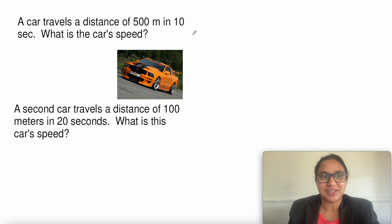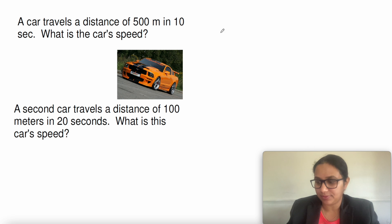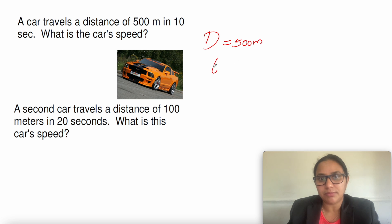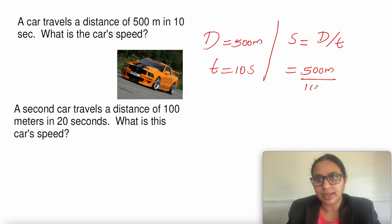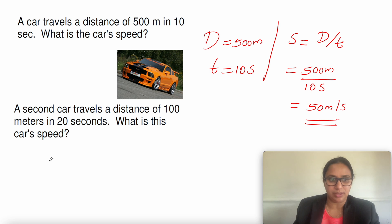Here is a question for you. A car travels a distance of 500 meters in 10 seconds. What is the car's speed? The distance given is 500 meters and time is 10 seconds. Using the formula S = d ÷ t, that is 500 meters divided by 10 seconds, which gives 50 meters per second. The speed of the car is 50 meters per second.